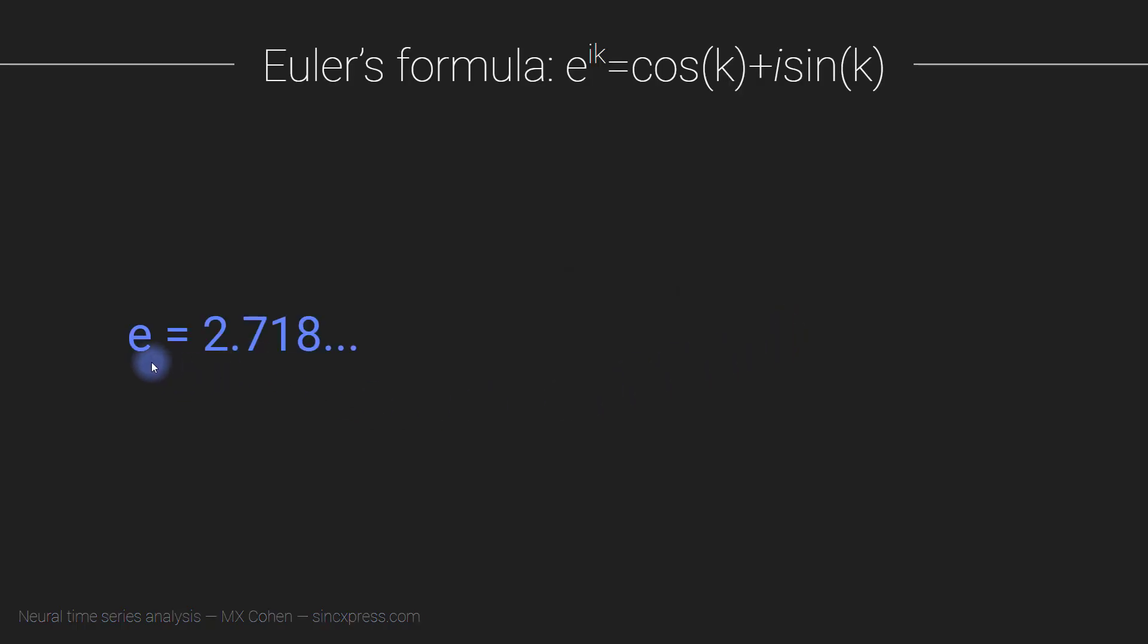This is all about the number e. This is an irrational number. It starts off as 2.718, and it just keeps going and going and going without any patterns, possibly until the universe ends.